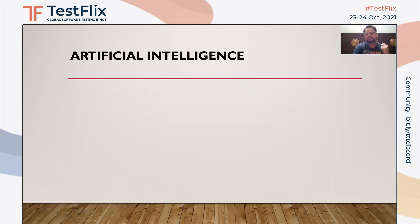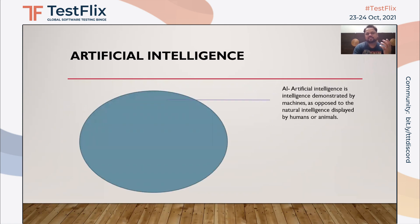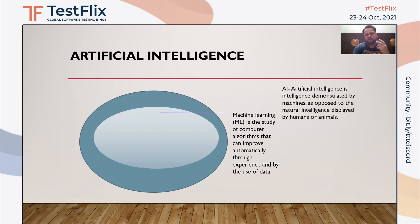Let's try to understand first what artificial intelligence is all about. Artificial intelligence is the intelligence demonstrated by machines as against human intelligence. It has its own subset which we call machine learning, where we study computer algorithms, use data, and try to improve automatically through experience. We use different approaches like supervised learning, unsupervised learning, and reinforcement learning.